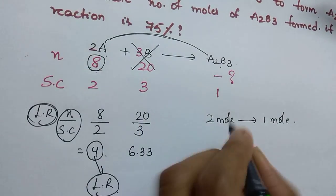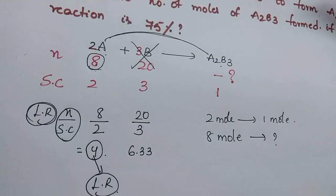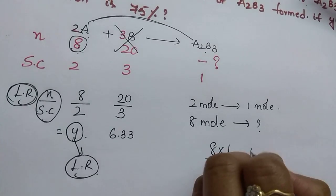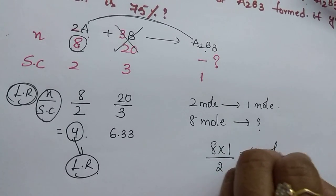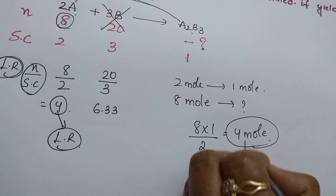Just do cross multiplication: 8 times 1 divided by 2 gives us 4 moles. This 4 moles is what?